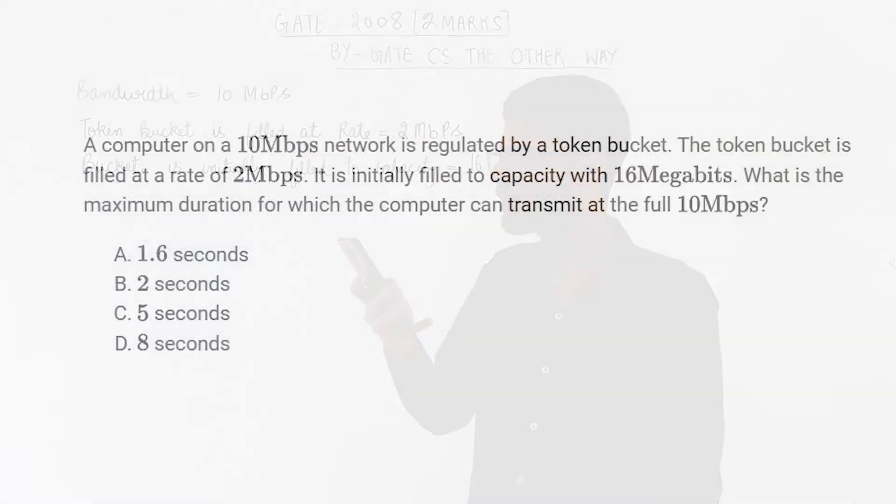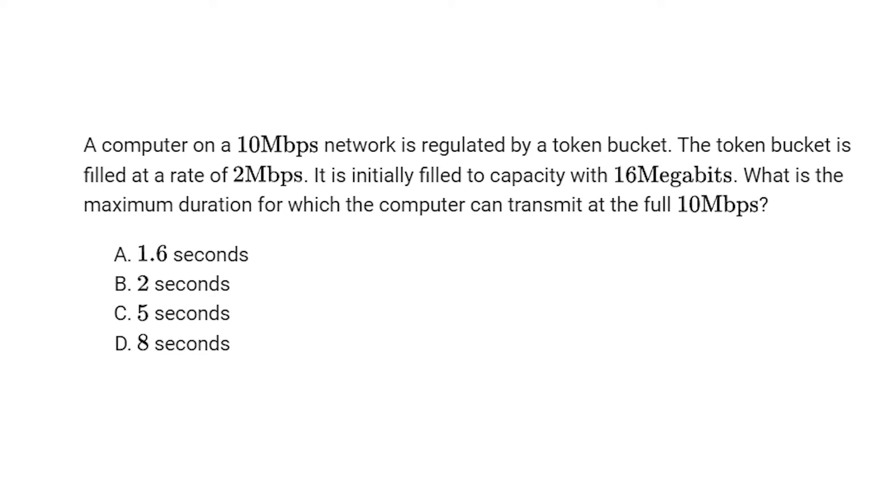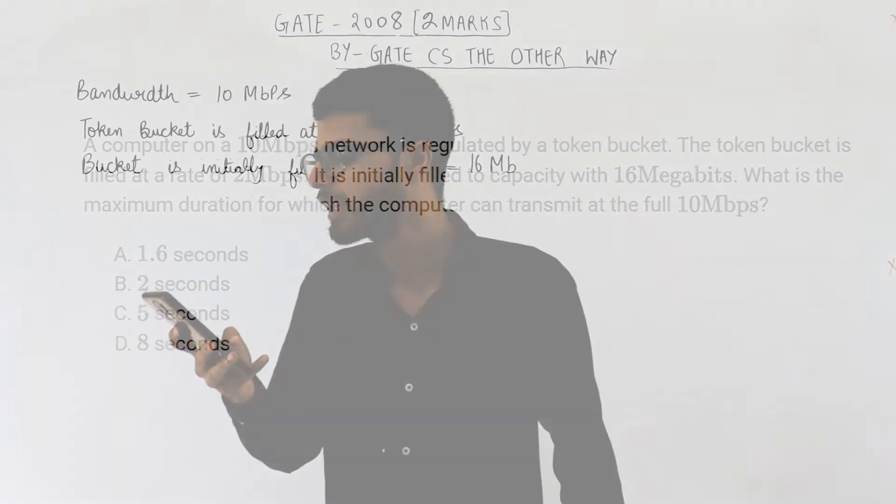Question reads: a computer on a 10 Mbps network is regulated by a token bucket. The token bucket is filled at a rate of 2 Mbps. It is initially filled to capacity with 16 megabits. What is the maximum duration for which the computer can transmit at the full 10 Mbps?